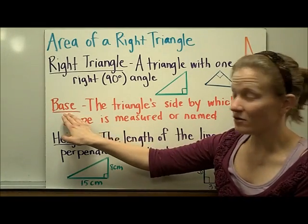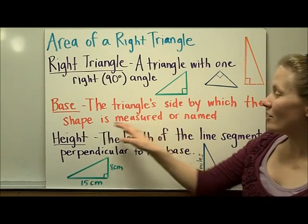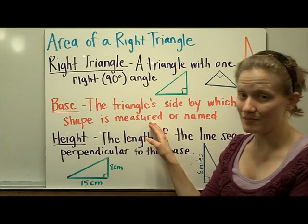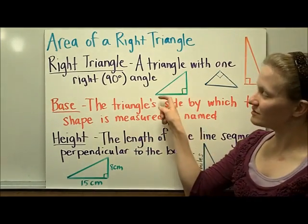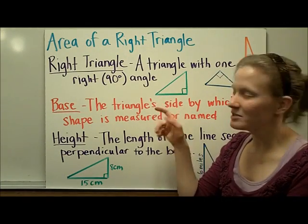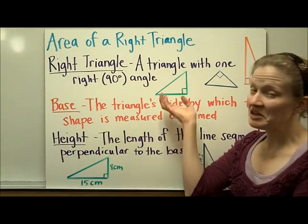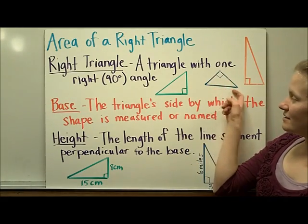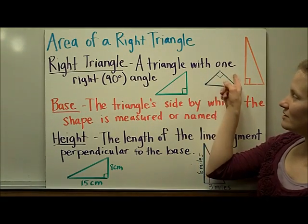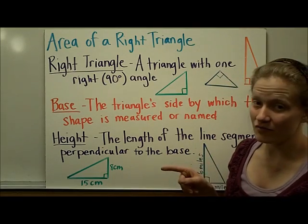The base of the triangle is the triangle side by which the shape is measured or named. It can be on the side, but most of the time in a book or practice problem, you'll see it on the side that it's sitting on. The base would be one of these two that's on either side of the right triangle.